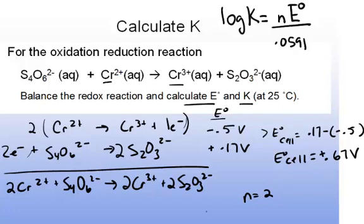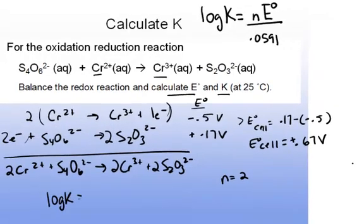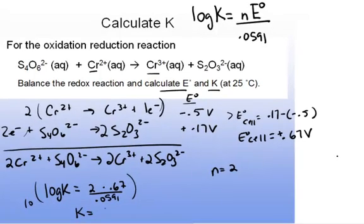I have everything I need to plug into this form of the equation, so it's going to be log base 10 of K equals 2 times the standard cell potential, which is 0.67, divided by 0.0591. If I take 10 to the power of both sides of this equation, raising both to the power of 10, then K here equals 4 times 10 to the 22nd.